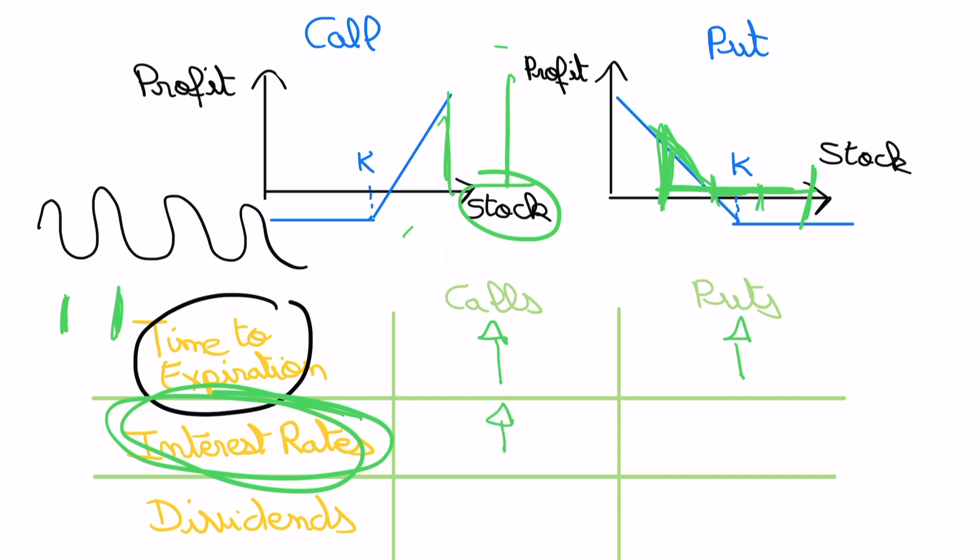This is a positive relationship. For puts it's opposite. If it goes up, you go out of the money and make close to zero, so this goes down.